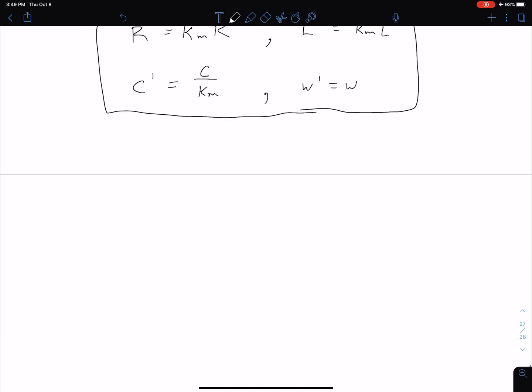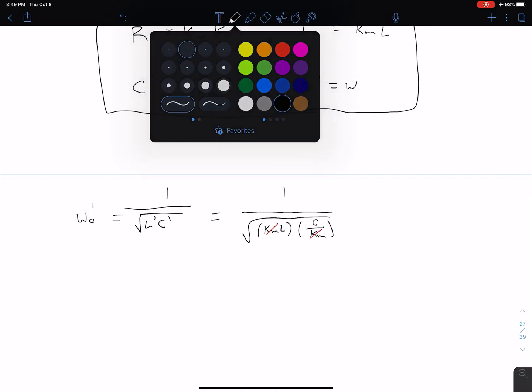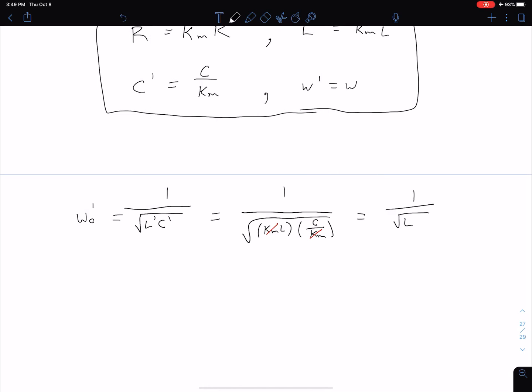One thing to note is let's consider our new resonant frequency. That's going to be 1 over the square root of L'C'. If we plug in those values, we have 1 over the square root, for L' it's KmL, for C' it's C over Km. We see that our two Kms are canceling out. We get that our resonant frequency is just 1 over √LC, which was the equation for our original resonant frequency. So as designed, we see that this is unchanged.